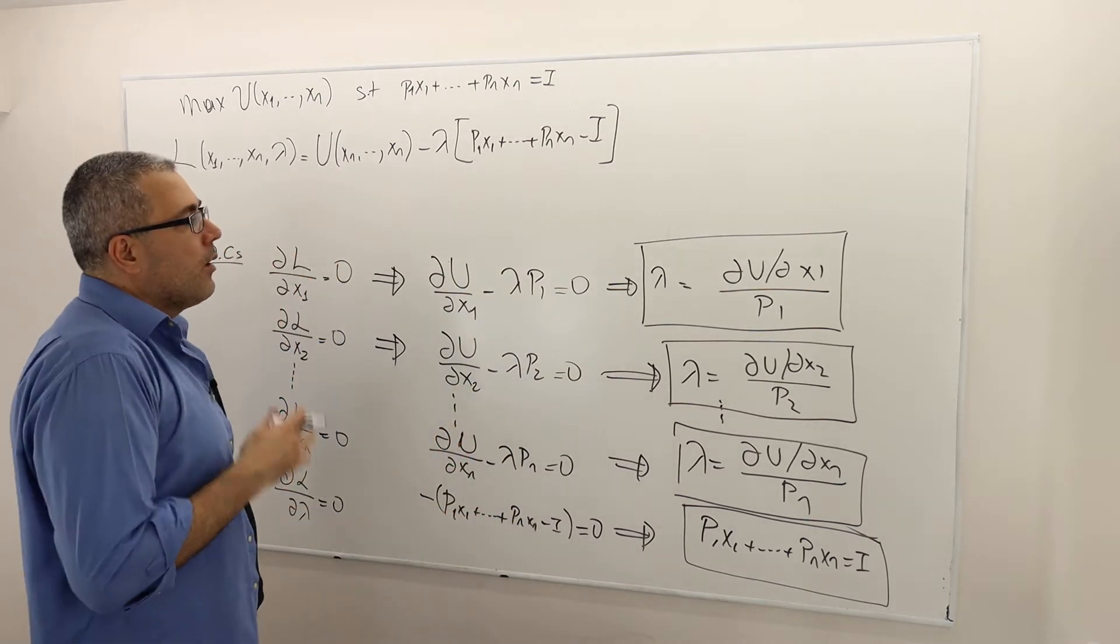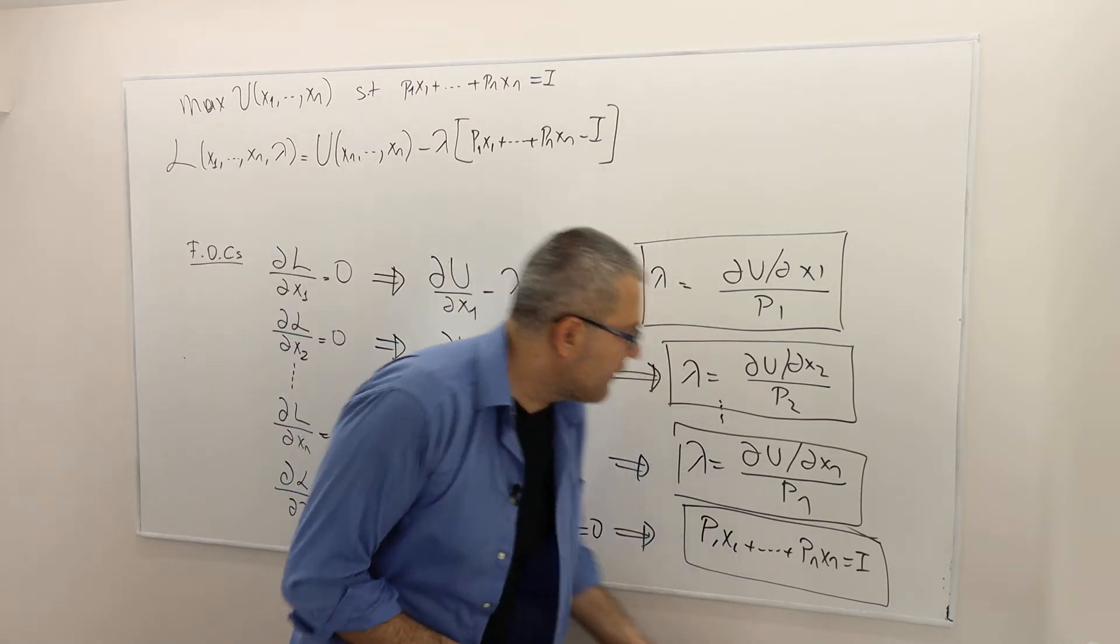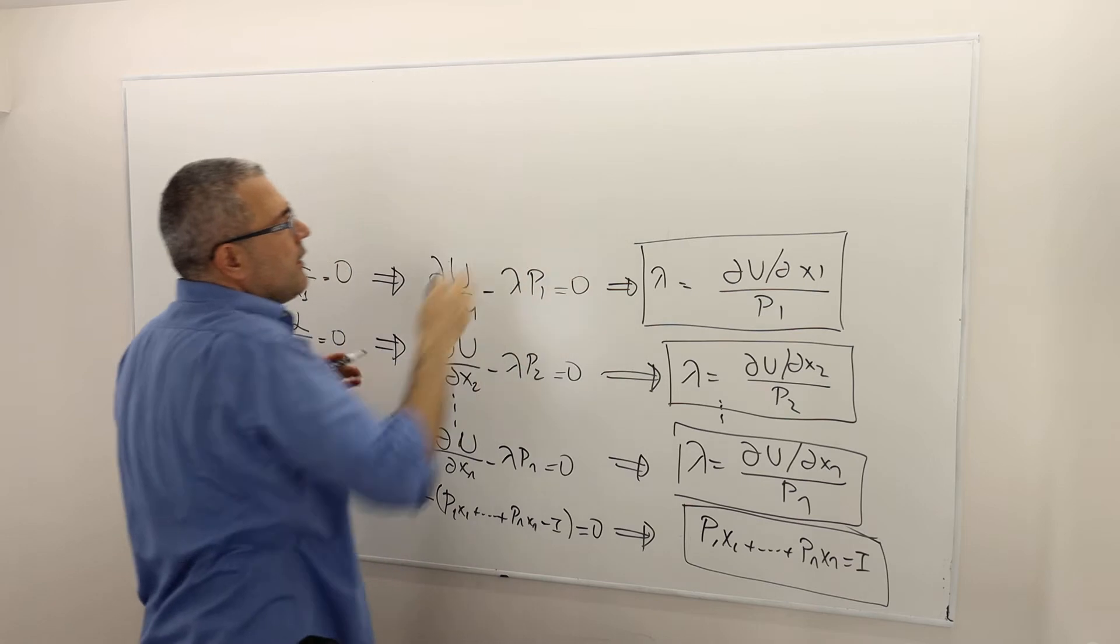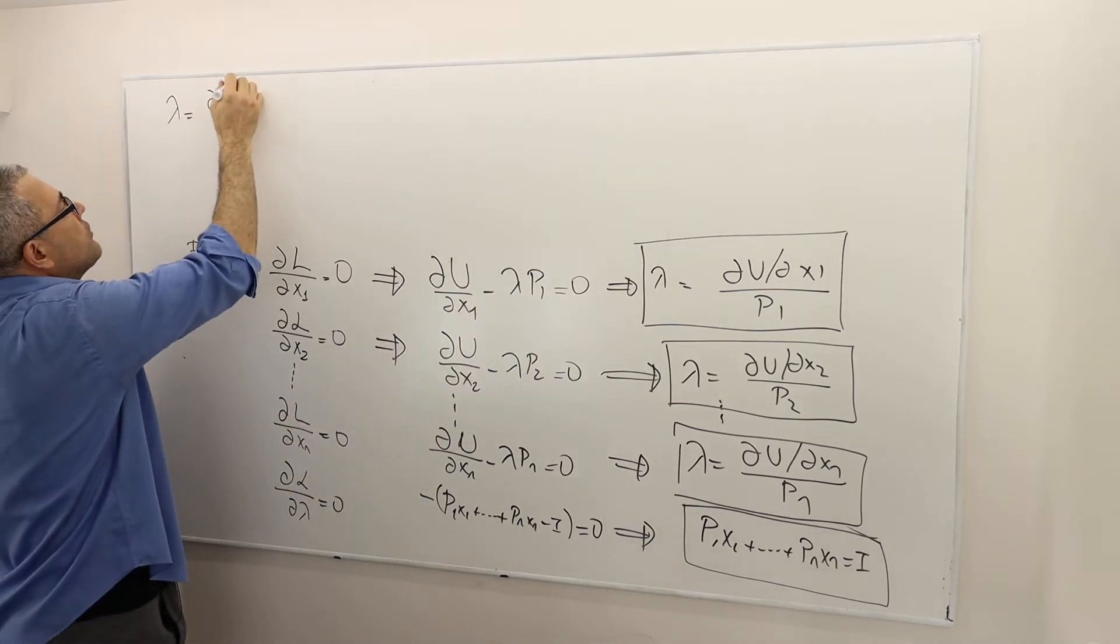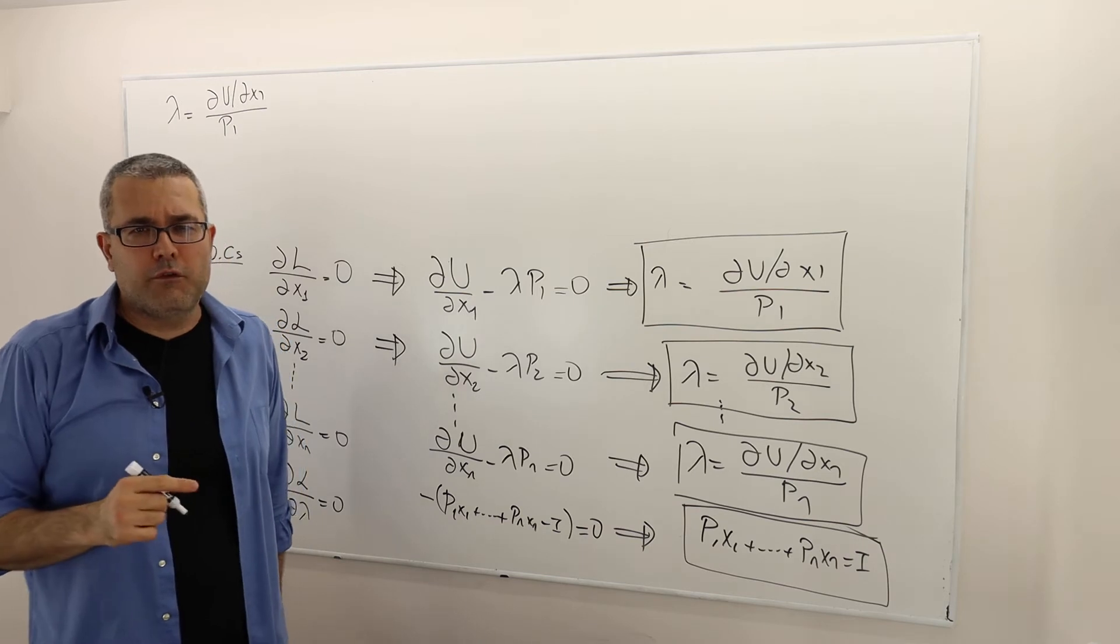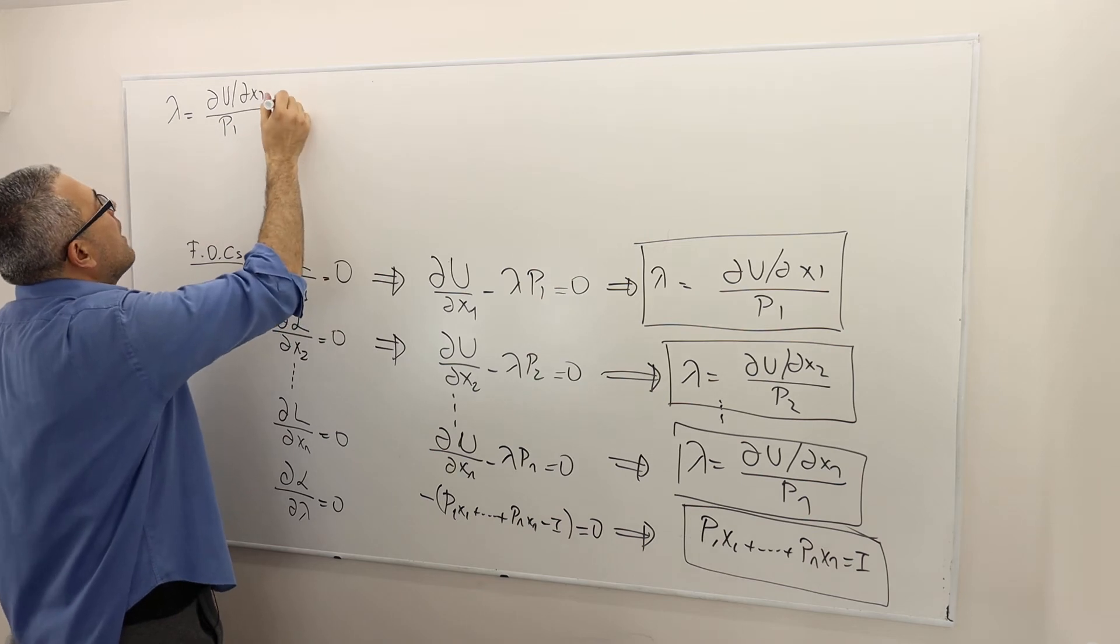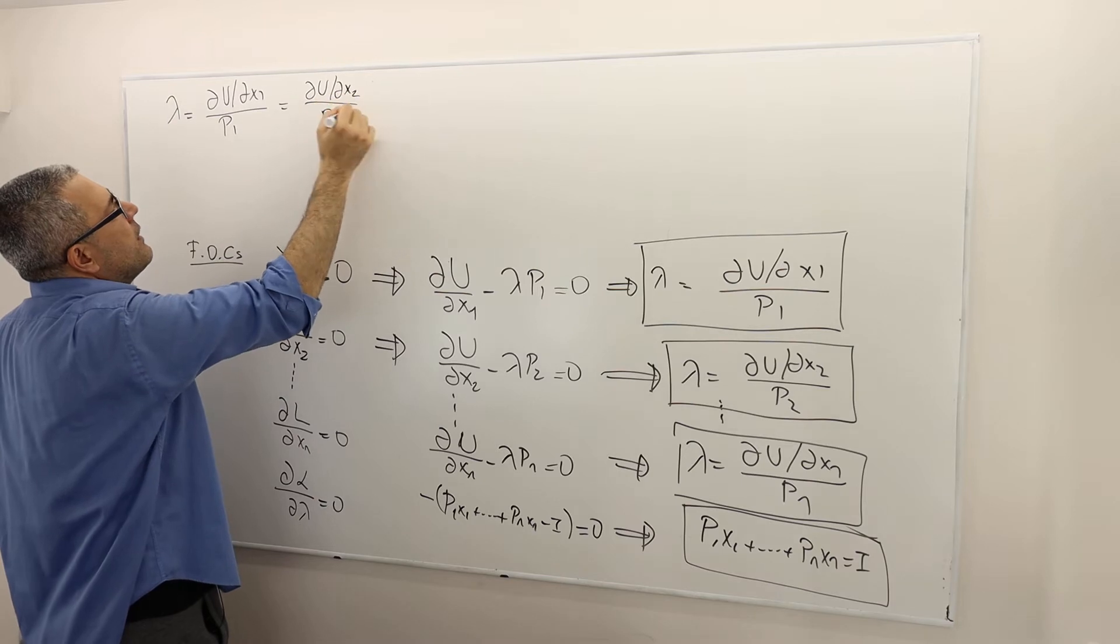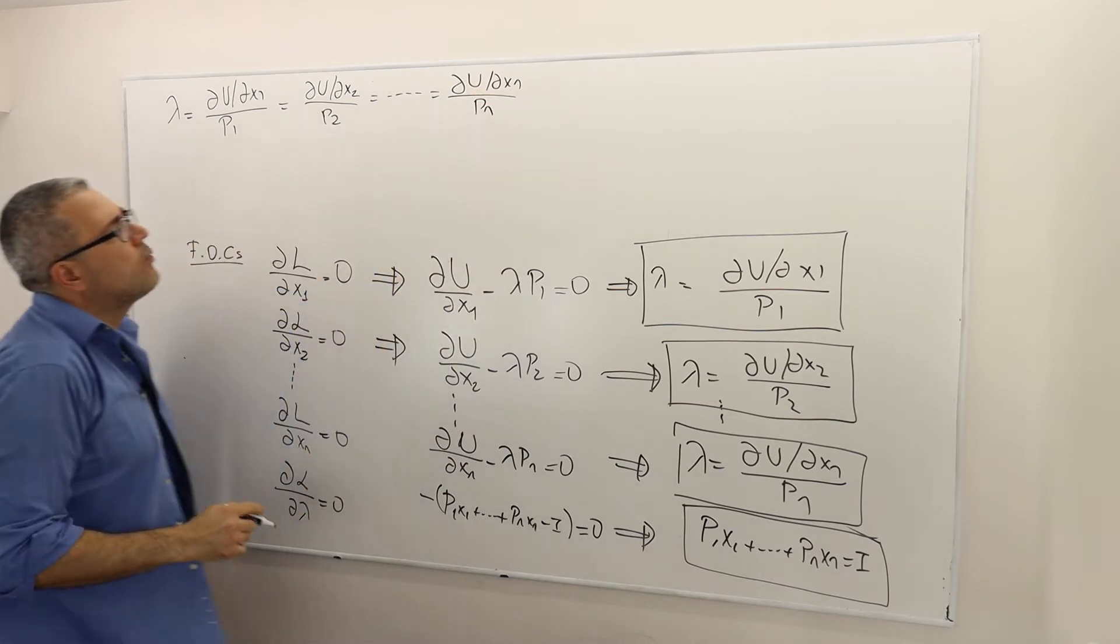Okay, so what can we learn from this exercise? Well, one thing we can learn is, I need to open up some space here. So what I learned is that this lambda term is equal to the marginal utility divided by price. And price is, in fact, marginal cost of consuming good one, right? Because p1 is the cost of one unit of good one. So that's also equal to del u del x2 divided by p2 and all the way up to del u del xn divided by pn.